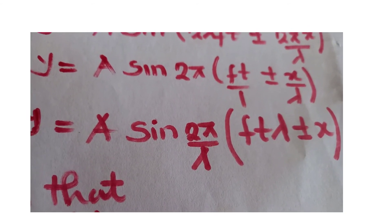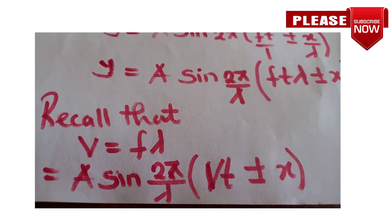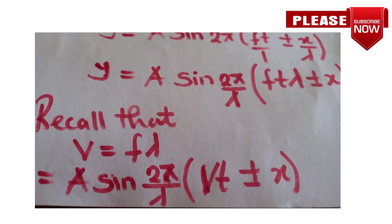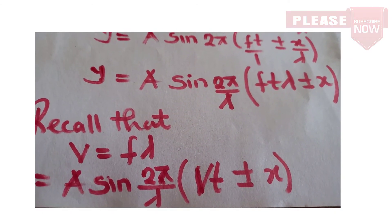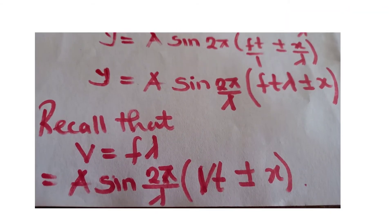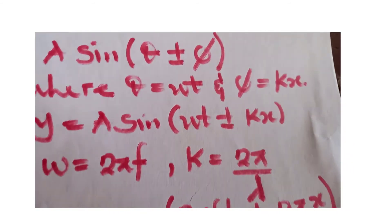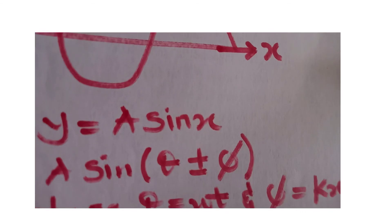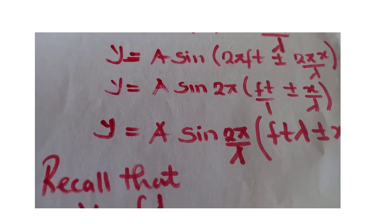We are going to have A sine 2π over λ in bracket of vt plus or minus x. These are wave equation formulas. Let's check again from the initial stage of our graph. We have all these on our wave equation formula.